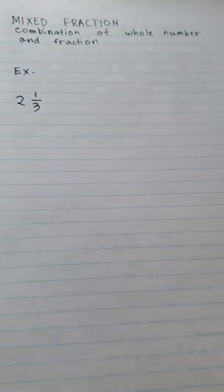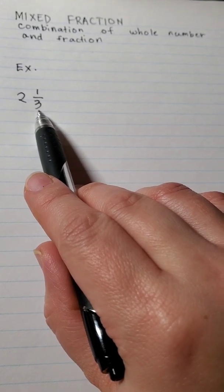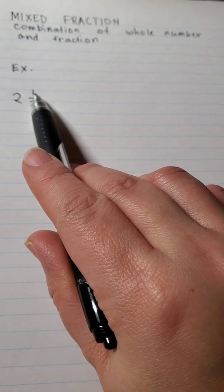So example, 2 and 1/3. So 2 is the whole number, 3 is the denominator and 1 is the numerator.